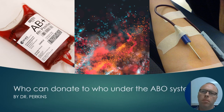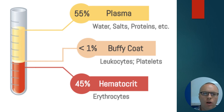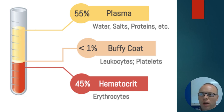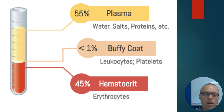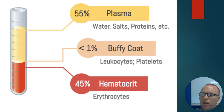Today we're going to be talking about blood donation, particularly the ABO system and who can donate to who. When we talk about blood donation, the first thing we need to deal with is what blood is. Your blood isn't just a random mixture of stuff. The two major parts we're going to be dealing with are plasma — the liquid part of blood that your red blood cells float in — and the red blood cells themselves.